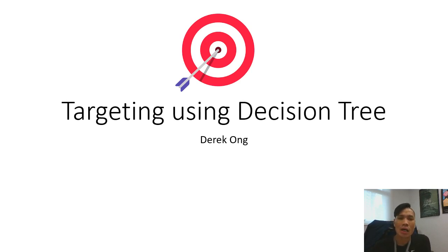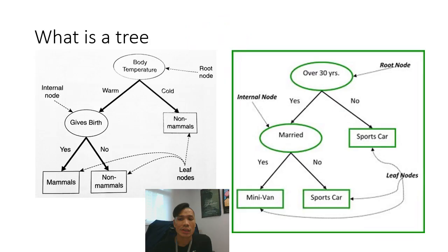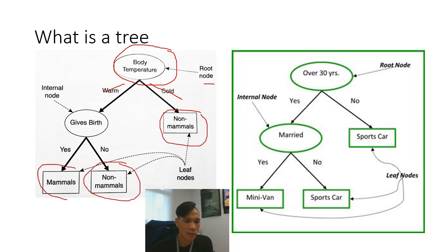Before I begin, I would like to explain to you what is actually a decision tree. If you notice that a decision tree is just basically what it is - it's a tree. Just imagine a tree that goes the other way around. A lot of trees always go from the roots up to the leaves, but this one you start from the roots on the top and then it goes down to the leaves. Here's where you see the root node and then the branches that branch out, and these terminal nodes are what we call as the leaf nodes.